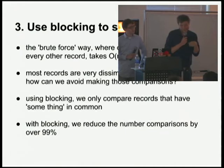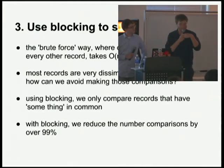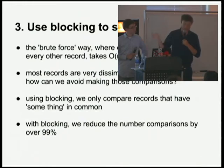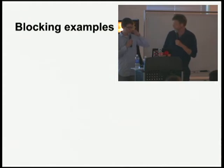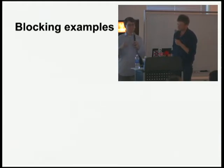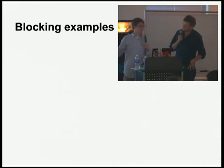With blocking, we reduce the number of comparisons we make by 99%, sometimes even more. To do it the brute force way takes n-squared time — imagine the data you have is this giant wad. If you have to compare everything to everything else, that wad is like a square multiplied by itself. But imagine if you took that wad and broke it into 20 smaller pieces — if you squared all of those, it's much less than if you squared the original.